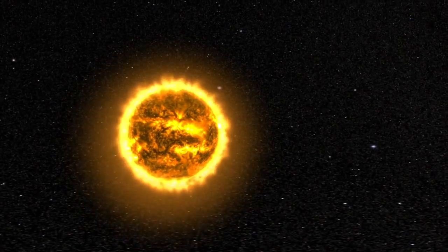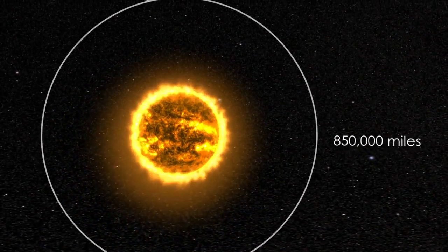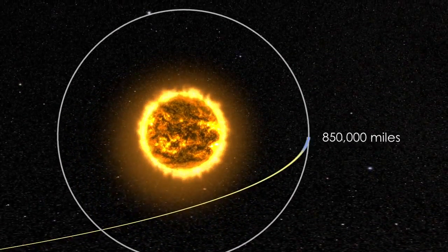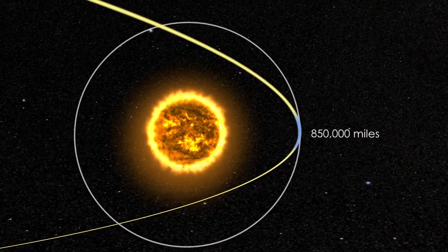To be considered a sungrazer, a comet needs to get within about 850,000 miles from the Sun at perihelion. Many come even closer, even to within a few thousand miles.